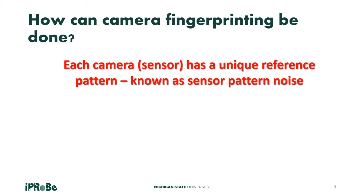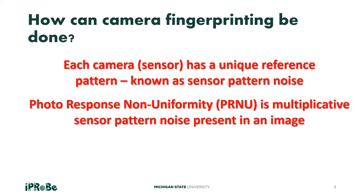Each camera or sensor has a unique reference pattern known as sensor pattern noise. Photoresponse non-uniformity, or PRNU, is a type of multiplicative sensor pattern noise present in an image. If the PRNU can be extracted from an image, it can be used for camera fingerprinting.